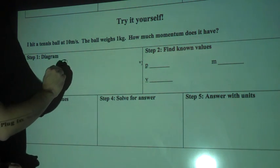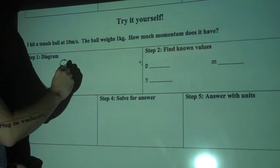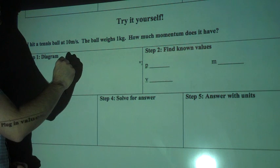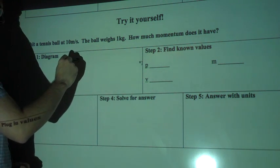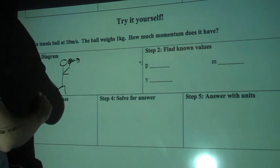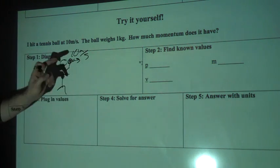So, draw a diagram. There's Mr. Finch, and I have a tennis racket in my hand. Hit this ball, it's flying this way. And it's going at 10 meters per second, which is actually pretty fast, and it weighs 1 kilogram.